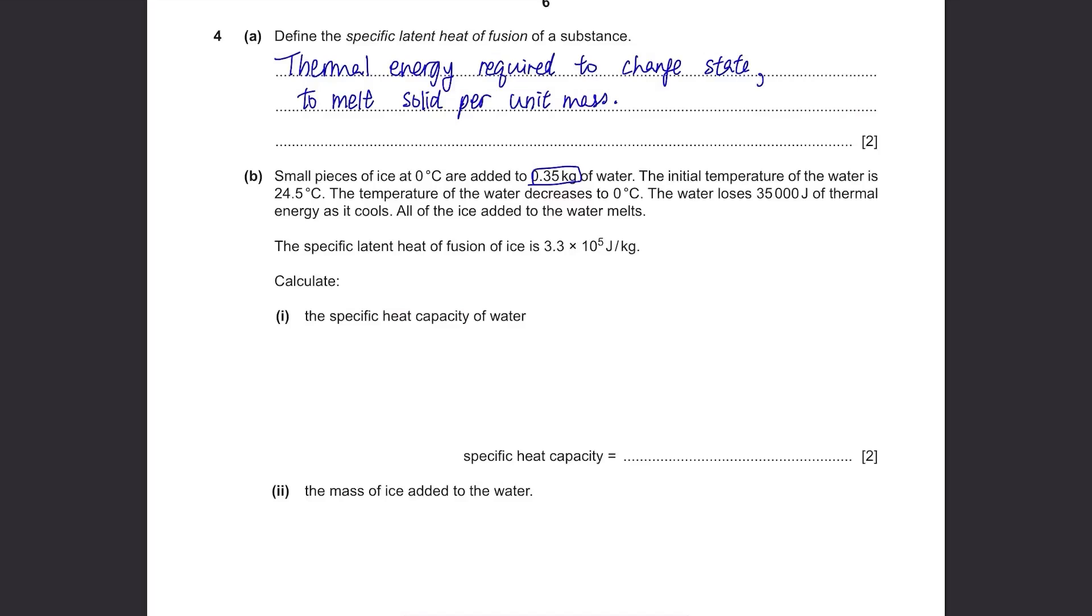We're given with a lot of information here. So don't try to figure out from the given information. Write the formula first. So energy equals mass times the specific heat capacity times the change in temperature. So rearrange it, it's energy divided by mass times the change in temperature. Energy was given here, 35,000. Then mass over here, 0.35. Then the change in temperature. Don't look at the temperature of the ice. Just look at the temperature of the water because you're finding the specific heat capacity of water. The initial temperature was 24.5 and it decreased to 0 degrees Celsius. So obviously the change in temperature is 24.5. If you calculate this, it's 4,100 joules per kilogram degree Celsius. Always write the unit.